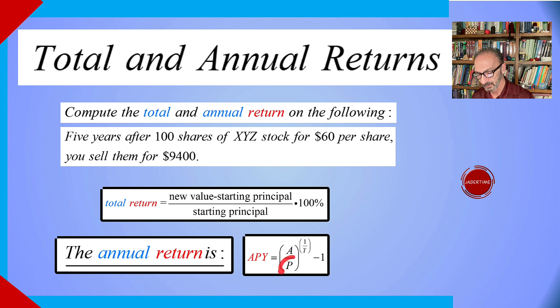All to the power 1 over 5, because Y is the number of years, which is five in this case, five years. And then we need to subtract one.